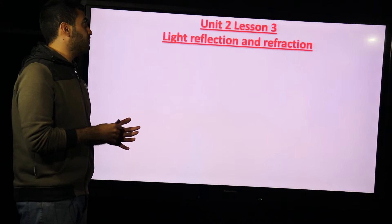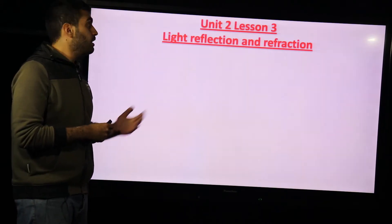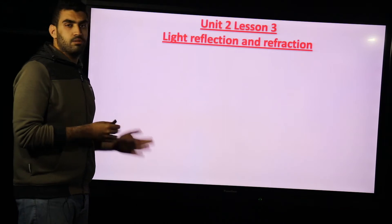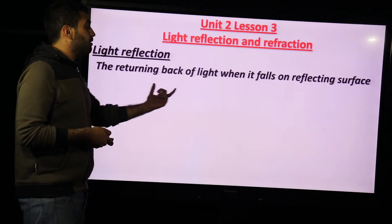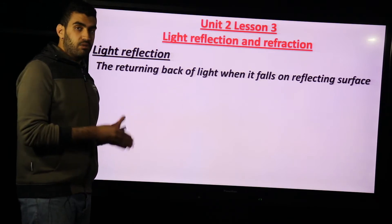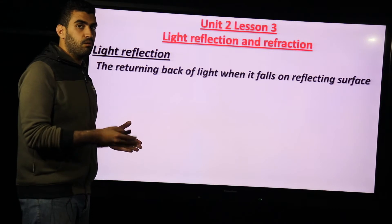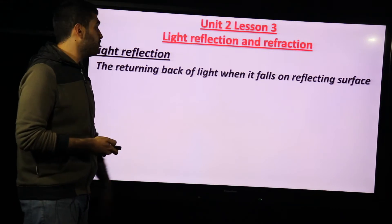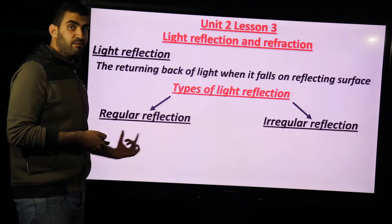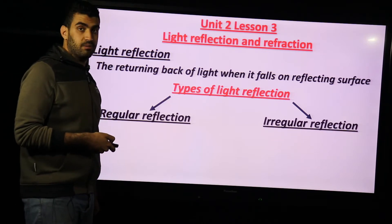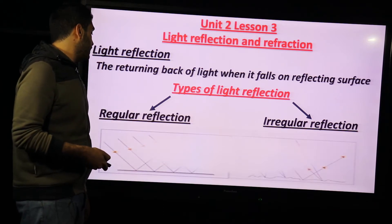We will talk about unit 2 lesson 3: light reflection and refraction, two different phenomena that occur to light. Light reflection means the returning back of light when it falls on a reflecting surface. A reflecting surface could be a mirror, a human, wood, or whatever. We have two types of light reflection: regular reflection and irregular reflection — uniform and non-uniform.